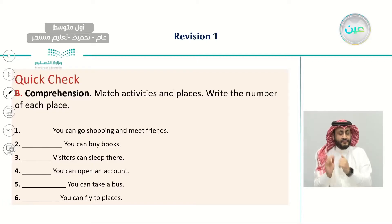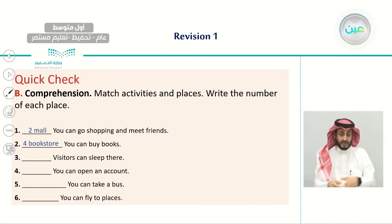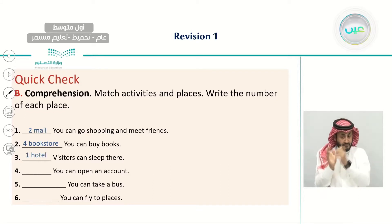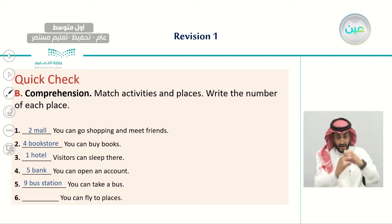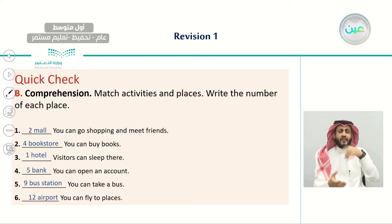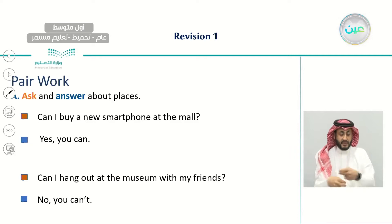For example: the place where you can go shopping and meet friends is the mall; where you can buy books is the bookstore; where you can sleep is the hotel; where you can open an account is the bank; where you can take a bus is the bus station; and where you can fly to different places is the airport. We also covered a pair work section where you make questions and answer them about different places.